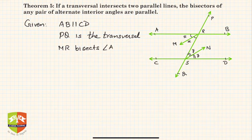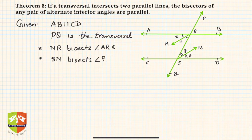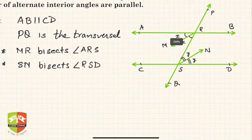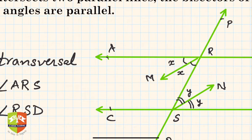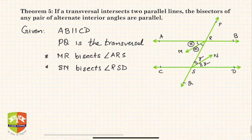MR bisects angle ARS, and SN bisects angle RSD. The angles are denoted by small x and y — you can see that MR bisects ARS so x equals x, and here y equals y.